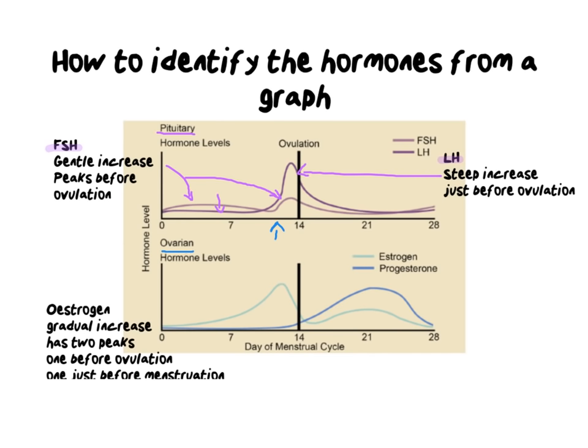Estrogen is sometimes confused with LH because of a dramatic peak just before ovulation. But there are key differences. Estrogen gradually increases over time — you can see a very slow, gradual increase at the beginning of the graph. What makes estrogen distinctly different from LH is that it has two peaks: one just before ovulation, and a second peak around day 21.